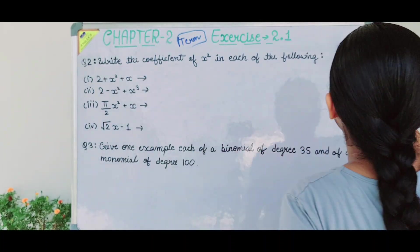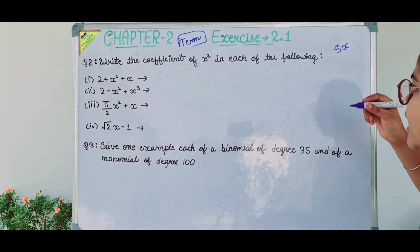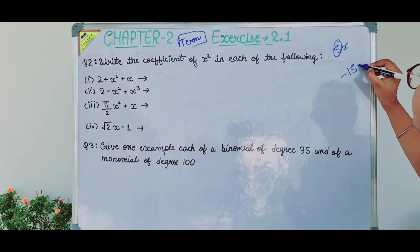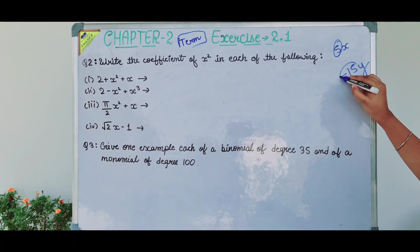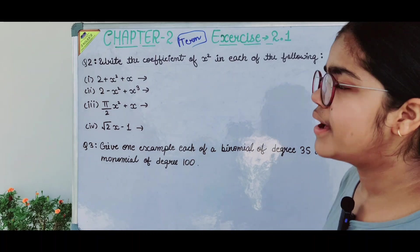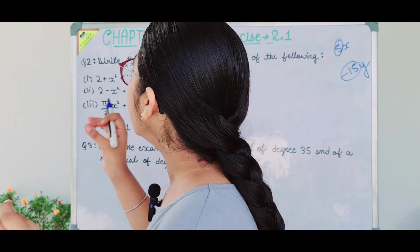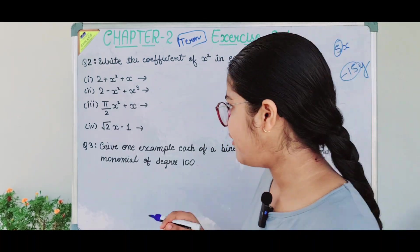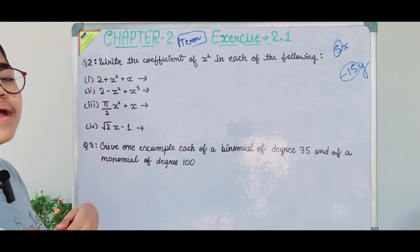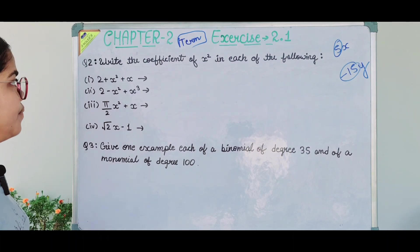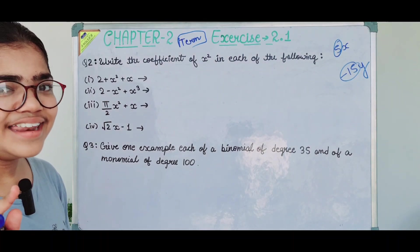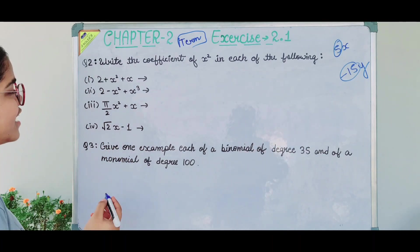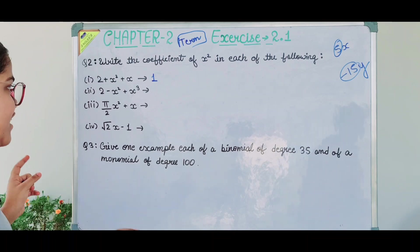What is a coefficient? In a term, the numerical part of the variable is called the coefficient. For example, if I say minus 15y, then minus 15 is the coefficient. The first part is 2 + x² + x. Looking at x², if there is no number written, it is 1. So the coefficient is 1.